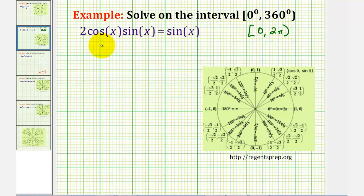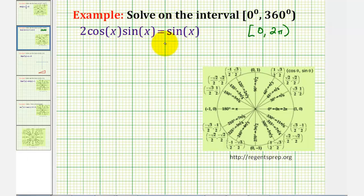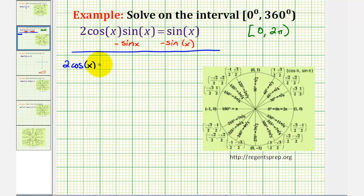Now if we take a look at our trig equation, normally we try to solve a trig equation by writing the equation in terms of one trig function, but notice in this case both terms do have a factor of sine x, which means if we set this equation equal to zero, we can solve it by factoring out sine x. So we want to start by setting this equation equal to zero, subtracting sine x on both sides, giving us two cosine x sine x minus sine x equals zero.